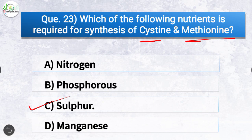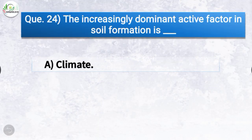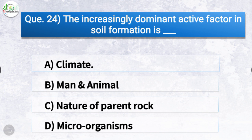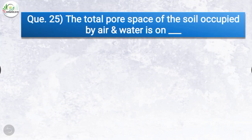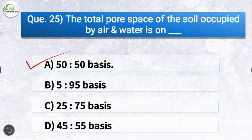Question number twenty-four: the increasingly dominant active factor in soil formation is? The correct answer is option A, climate. Question number twenty-five: the total pore space of the soil occupied by air and water is? The correct answer is option A, 50:50 basis.